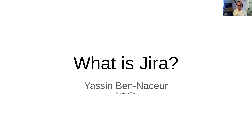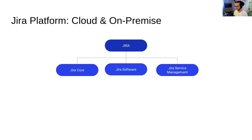So what is Jira? Jira is a web-based platform and as we can see here, it's composed of three different parts. You have Jira Core, which is the basis of the system, then you have the first extension called Jira Software, and then the third extension called Jira Service Management. These three parts of the Jira platform are available for the cloud as well as for self-hosted systems, and you can decide which one fits your needs.